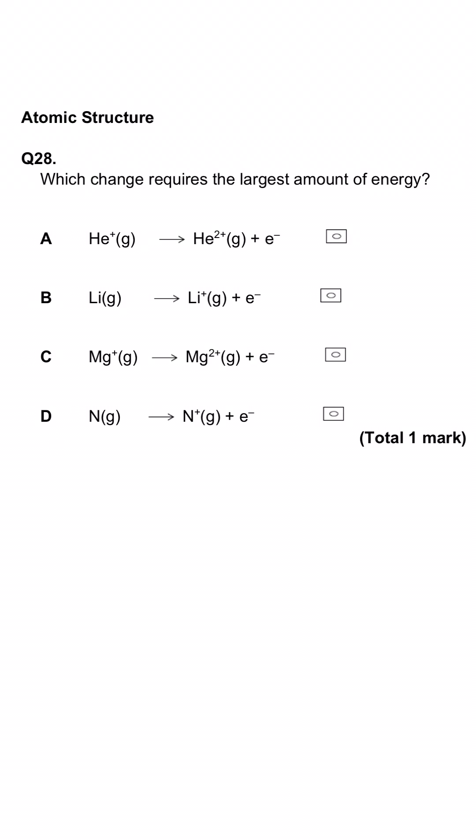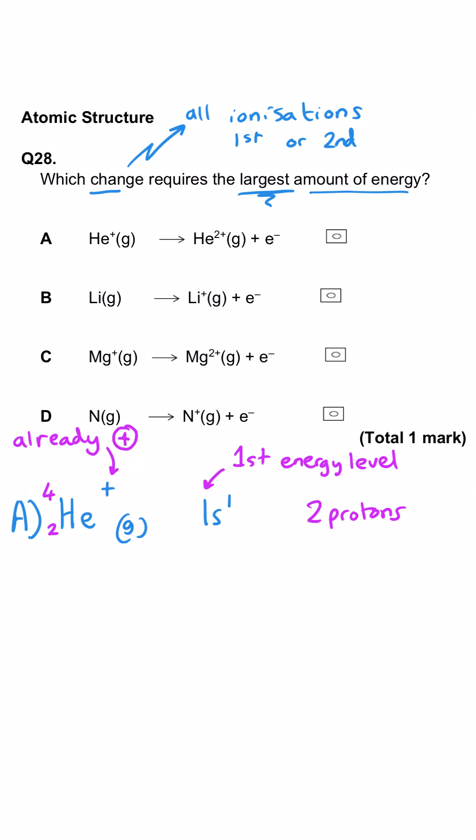Here we're asked which of these changes requires the largest amount of energy and they're all ionizations. Some of them are first, some of them are second. We need to look at where we're removing the electrons from. Helium plus has only got one electron. It's being removed from the 1s subshell but it's got two protons. That's going to be a huge amount of energy because the electrons are really close to the nucleus and in fact this is the largest second ionization energy you're going to find. So A is the correct answer.